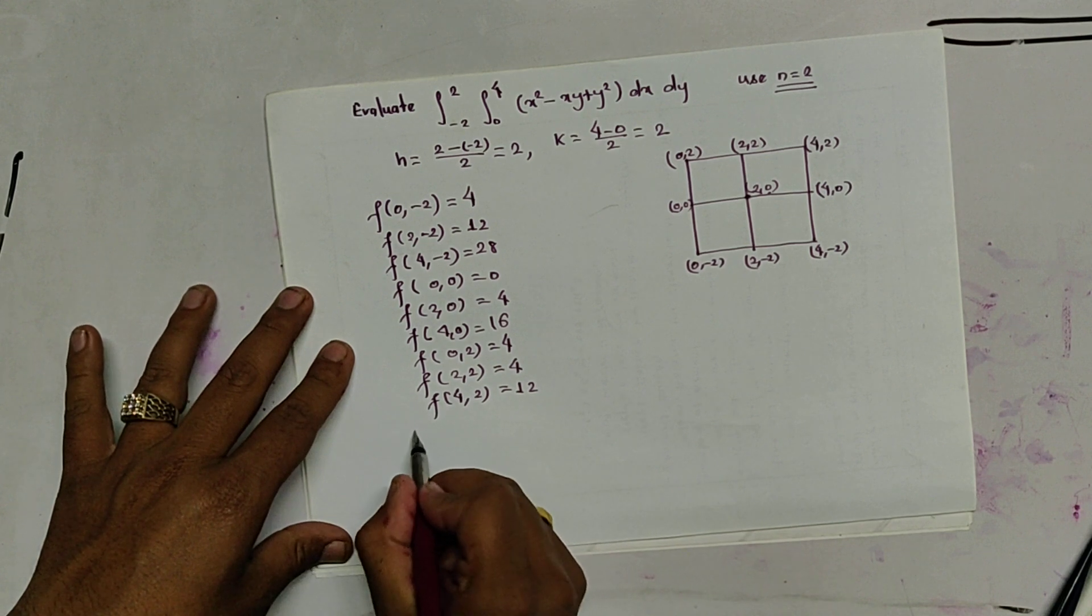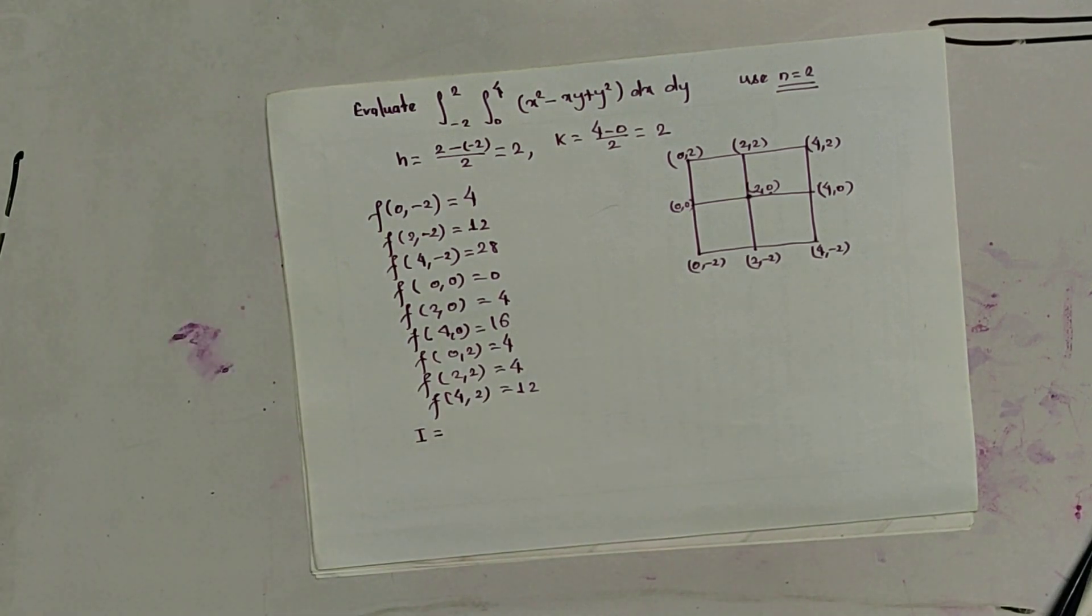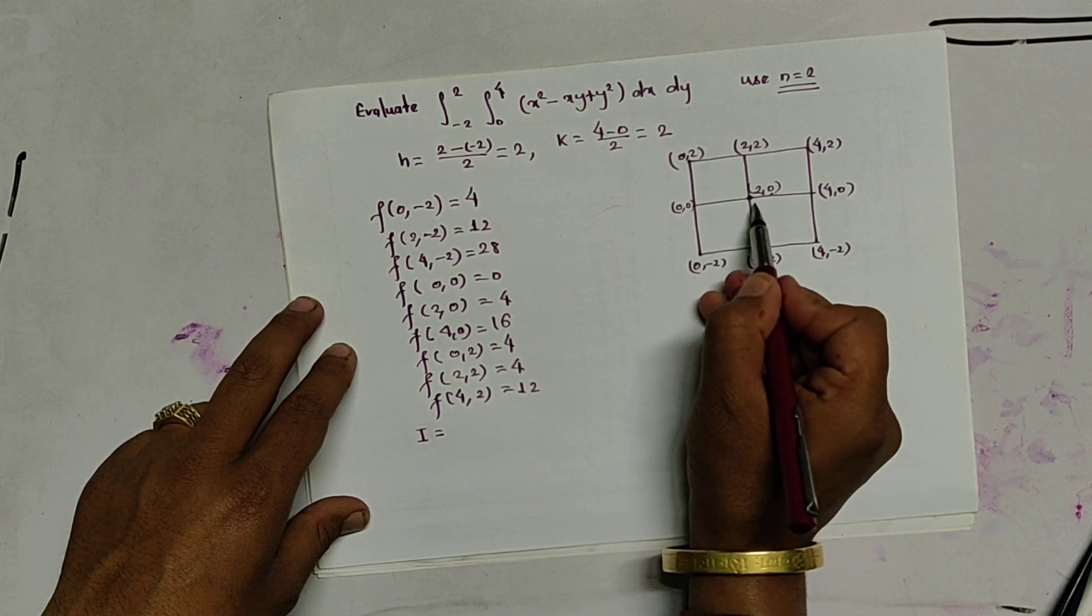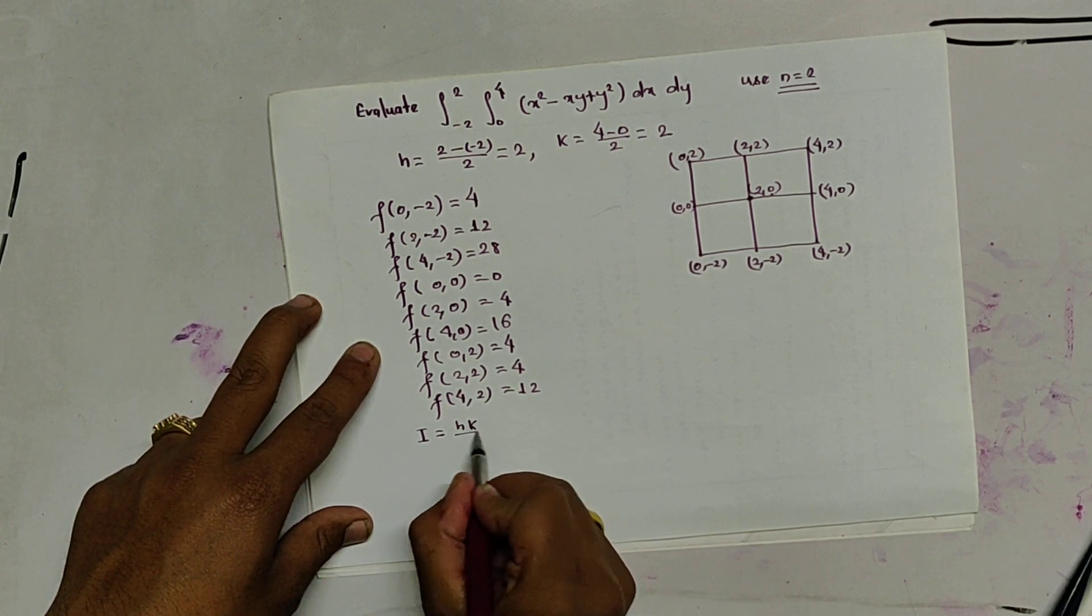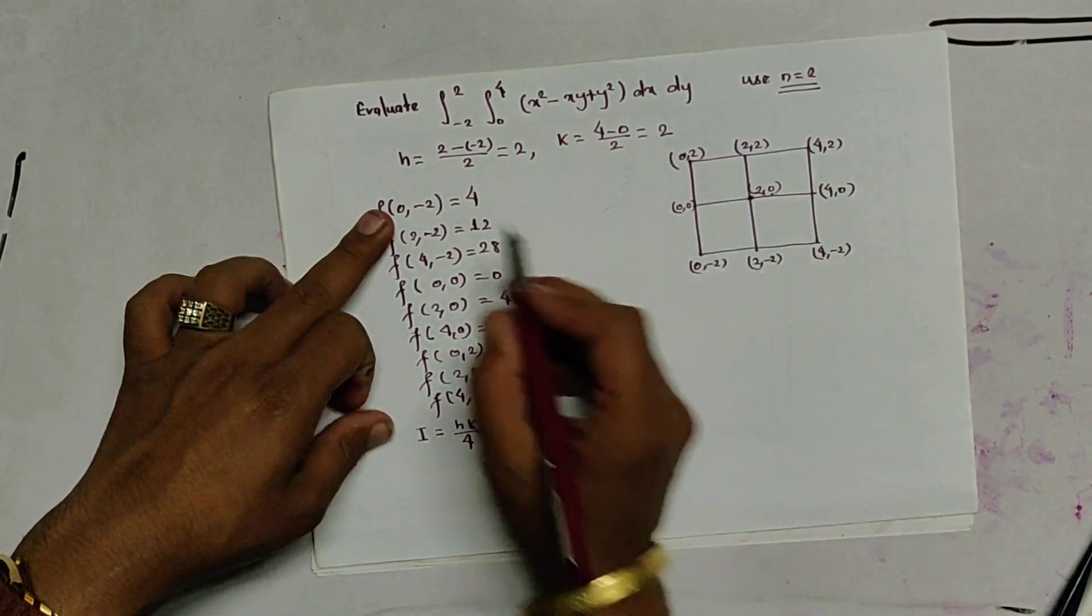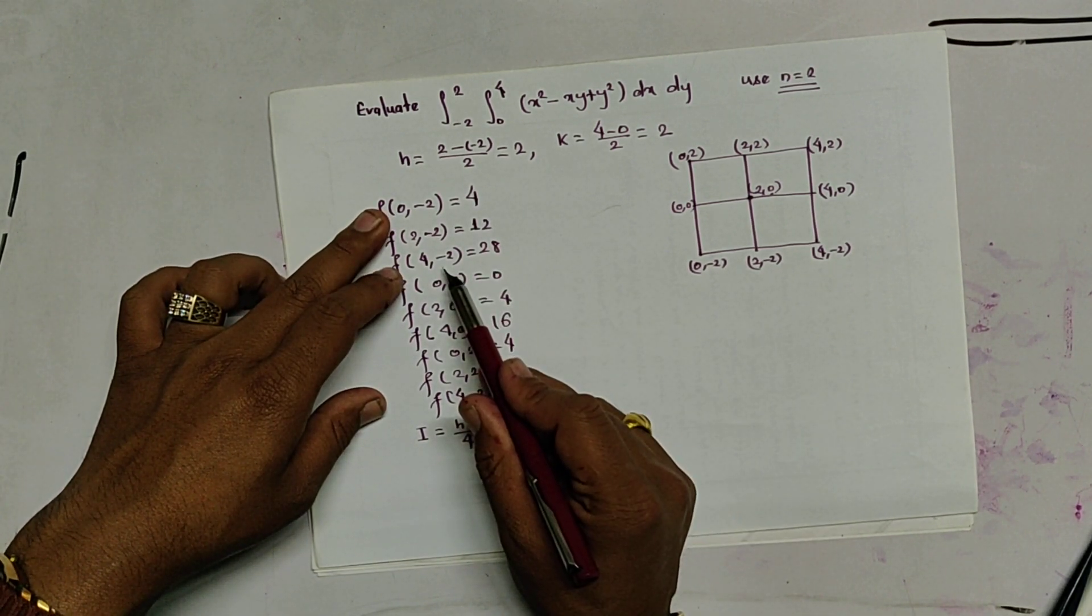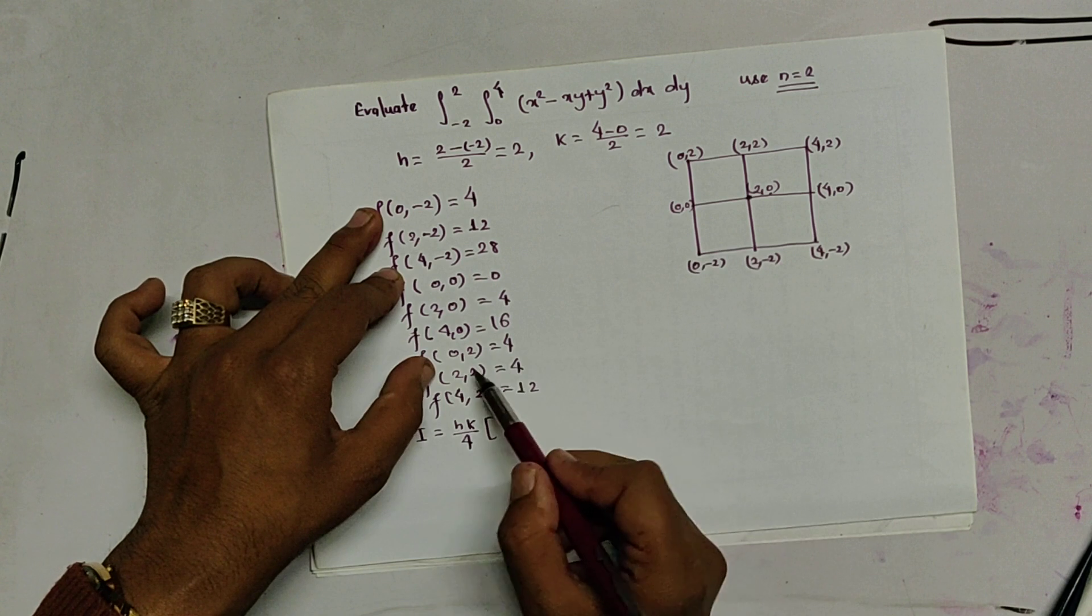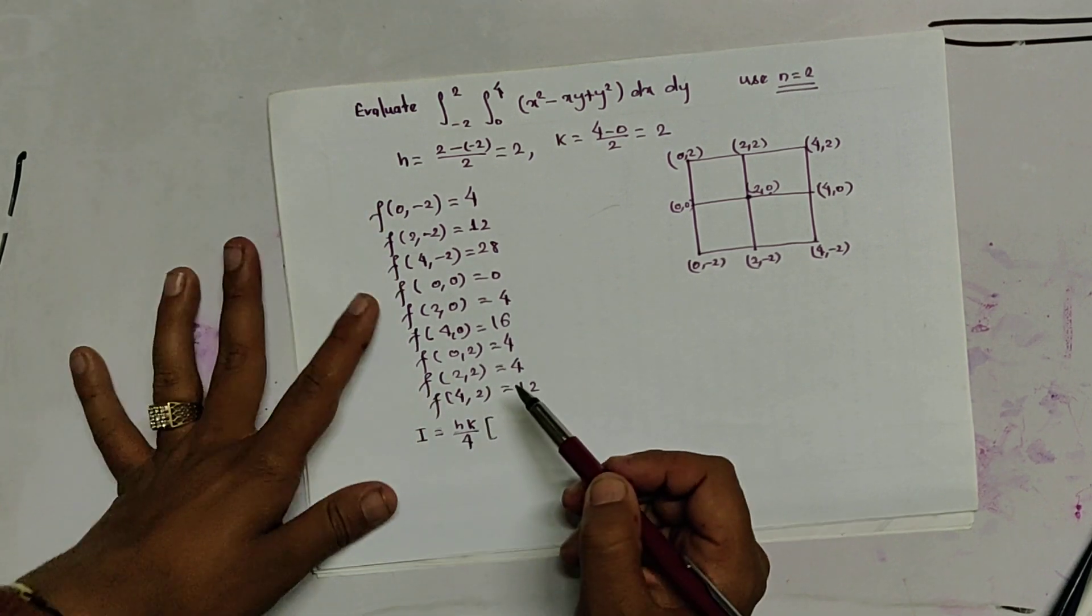Now we use, first use trapezoidal rule. So what was the formula for the trapezoidal rule? This was 2, 2, 2 and middle part was multiplied by 4. So that means h k by 4. The corners are not multiplied by 4. So, corners are 0 minus 2, 4 minus 2, 0, 2 and 4, 2. So, these are the four corners.